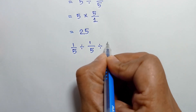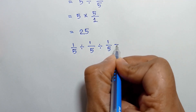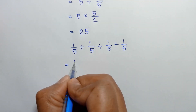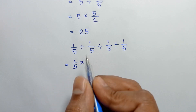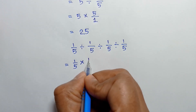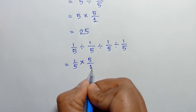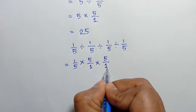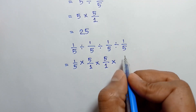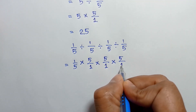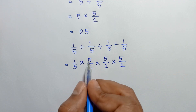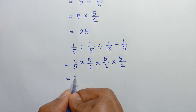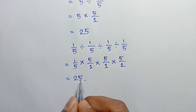In another way, we can find this easily. 1 over 5 divided by 1 over 5 divided by 1 over 5 equals 1 over 5 times the reciprocal of 1 over 5, which is 5 over 1, times the reciprocal of 1 over 5, which is 5 over 1, times again the reciprocal of 1 over 5, which is 5 over 1. Now this 5 and this 5 will cancel out, and it will remain 5 times 5, which is 25.